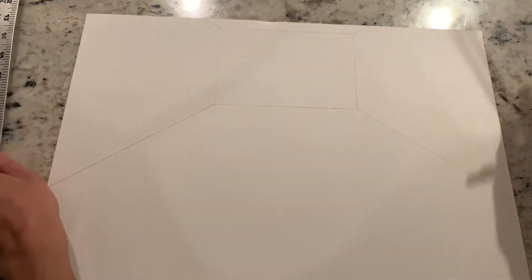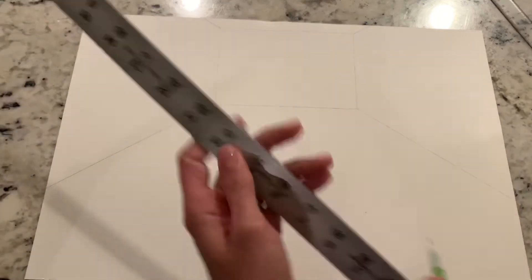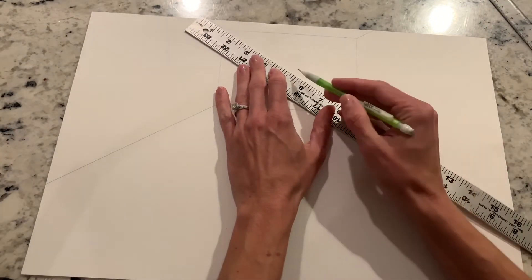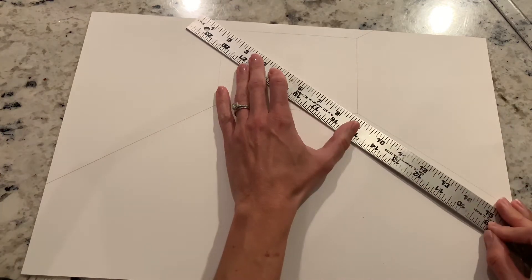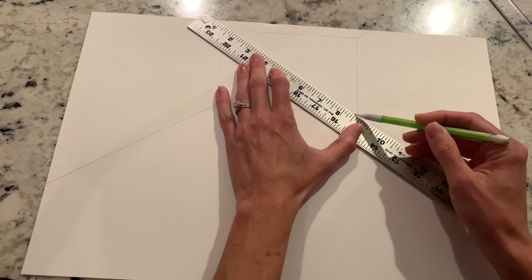Once you have those dots, all you have to do is take your t-square or your ruler. I have a bent ruler here that I'm going to use. You're going to line the vanishing point up with that dot and just draw that convergence line.